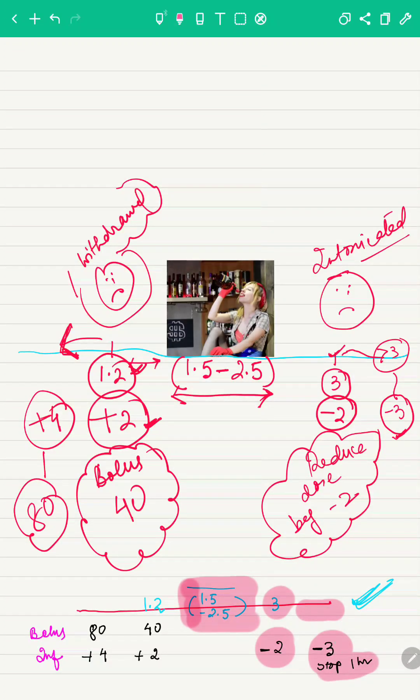And yes, one more thing. When she comes so intoxicated, more than 3 range, you have to stop the drug immediately. The maintenance is decreased by 3, but in that case we have to stop it immediately for 1 hour and then give a maintenance of 3 less than how much she was allowed to take.